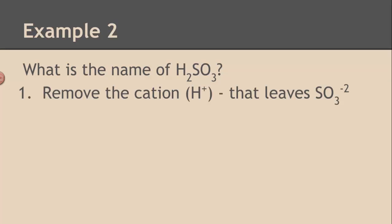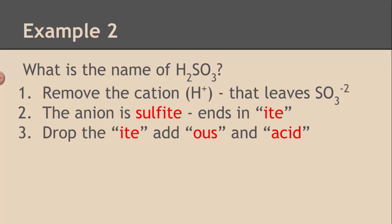Take away the cations, both of them, H+. That leaves SO3 -2. That's a polyatomic ion. It's called sulfite. It ends in -ite. Drop the -ite, put -ous, and put the word acid. Now, sulfur always causes problems. Sulfur and phosphorus always cause problems. It's not sulfous acid, even though it should be. It's actually sulfurous acid. The -ur comes back sometimes. Sulfur and phosphorus do that. The other ones don't.